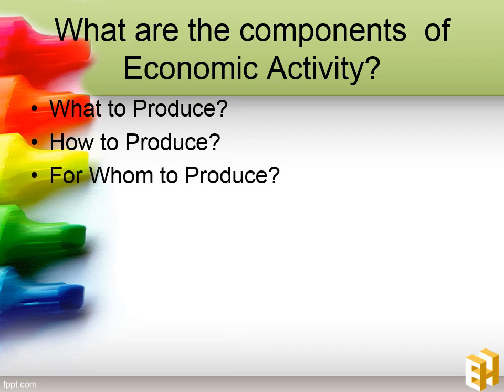Third is for whom to produce. For whom to produce would decide what is the market — for whom are you producing the good? If there are no market or no consumers, it would be an irrational decision to produce a commodity. So, for whom to produce is essentially about identifying your market and your consumers.